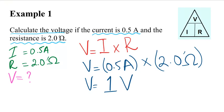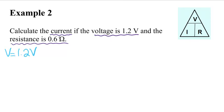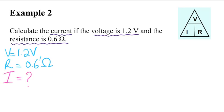Let's do the second example. We need to calculate current; voltage and resistance are given to us. Step number one, let's write down what is given to us: voltage is 1.2 volts and resistance is 0.6 ohms. Step number two is to write down what we need to solve for, which is current. Step number three is to write down the formula, which is V equals I times R.